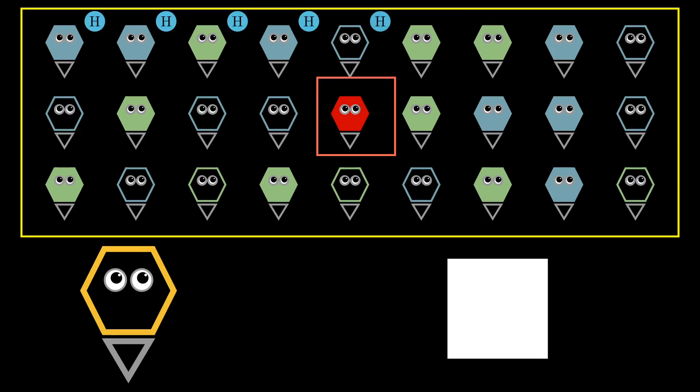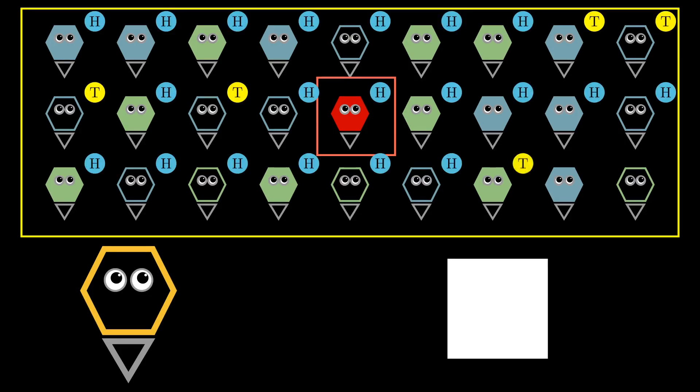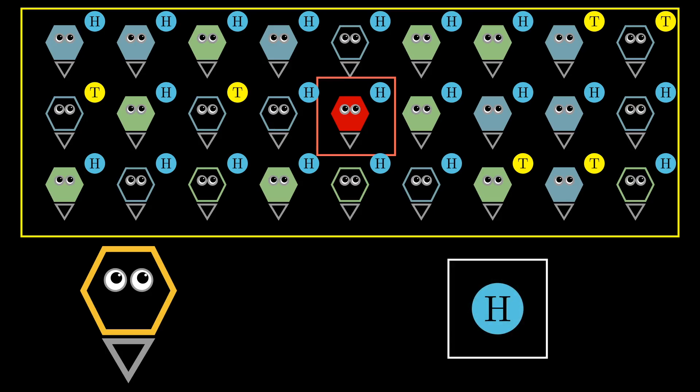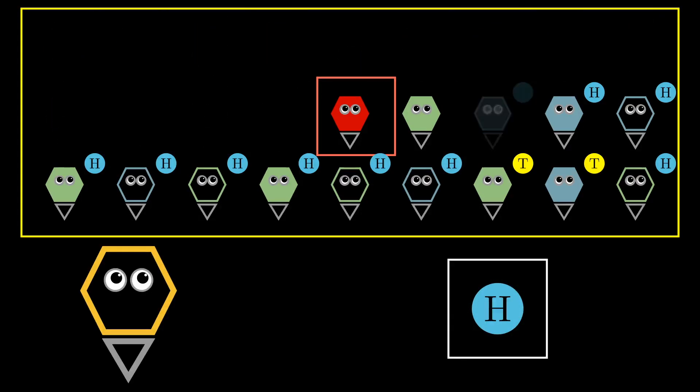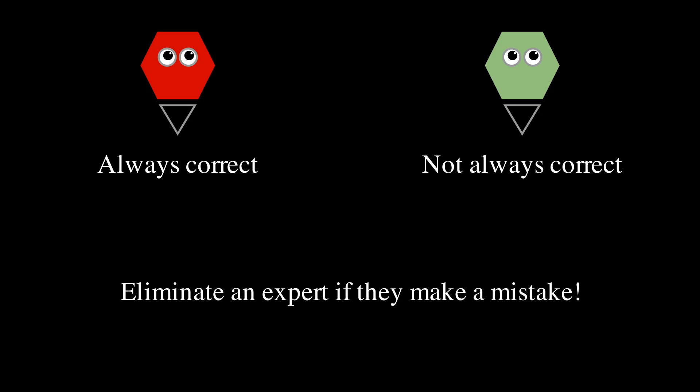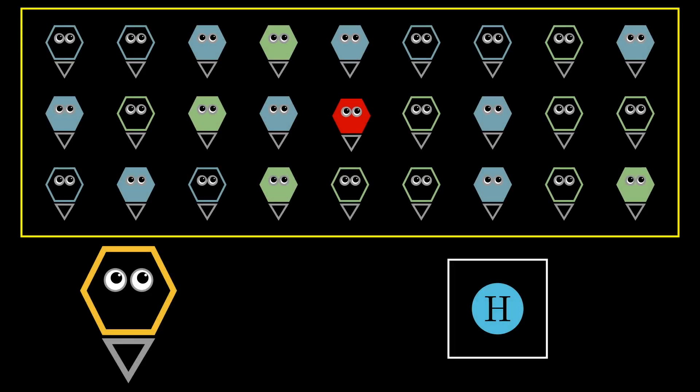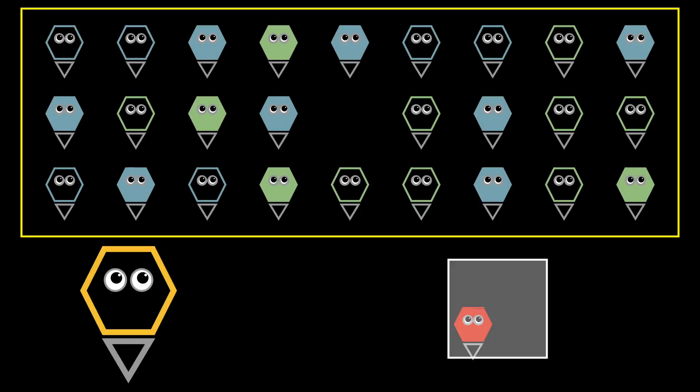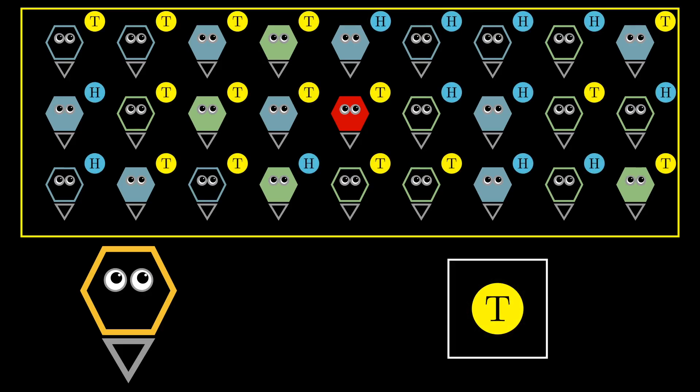The one thing that distinguishes the designated expert from the rest is that she is never incorrect. All other experts have the ability to be incorrect. So the idea is simple. The moment we see an expert make an incorrect prediction, we remove them altogether from further consideration. As we continue to remove experts round after round, we will eventually reach a single remaining expert, who must be the designated expert.